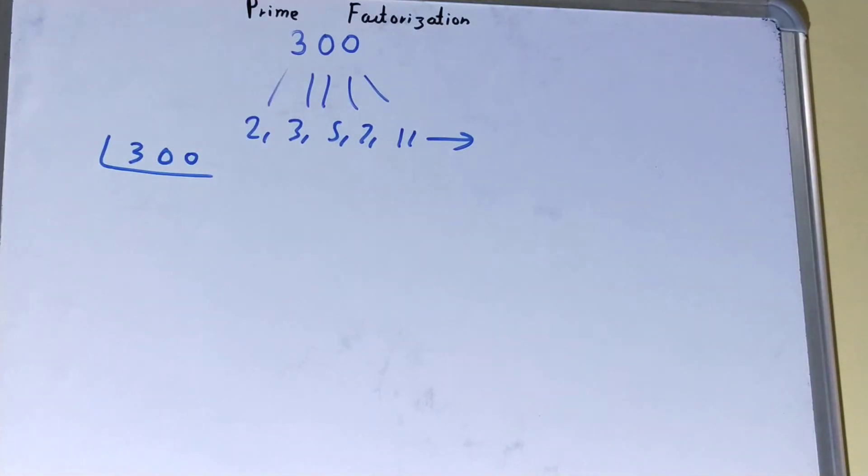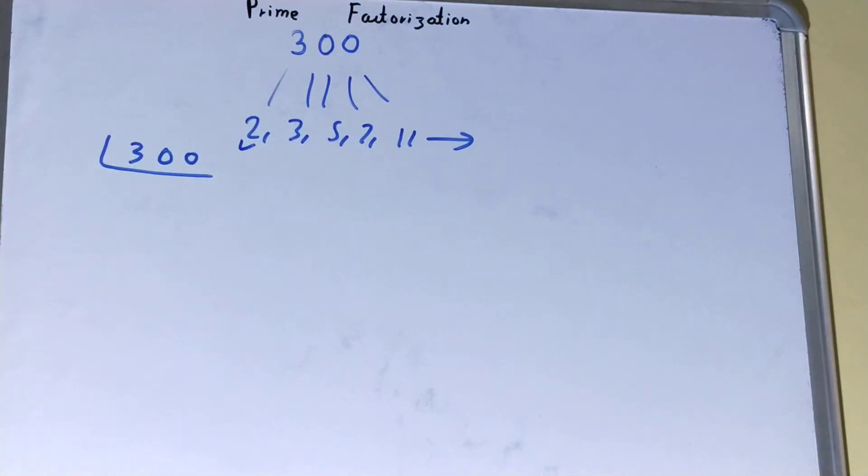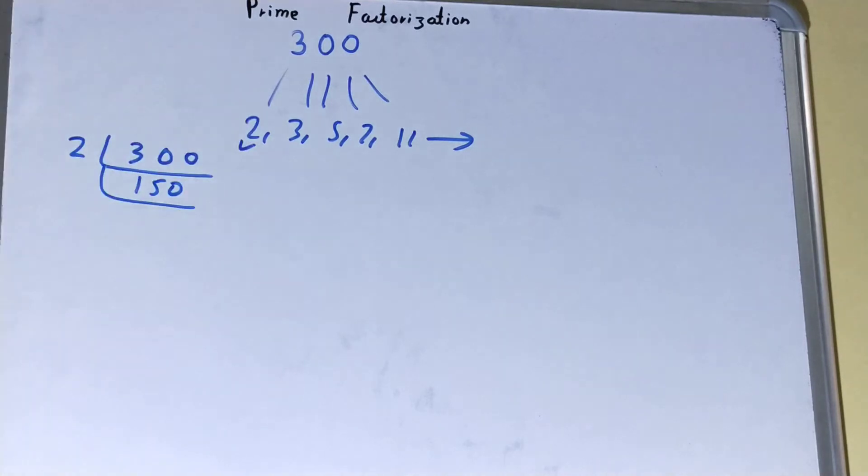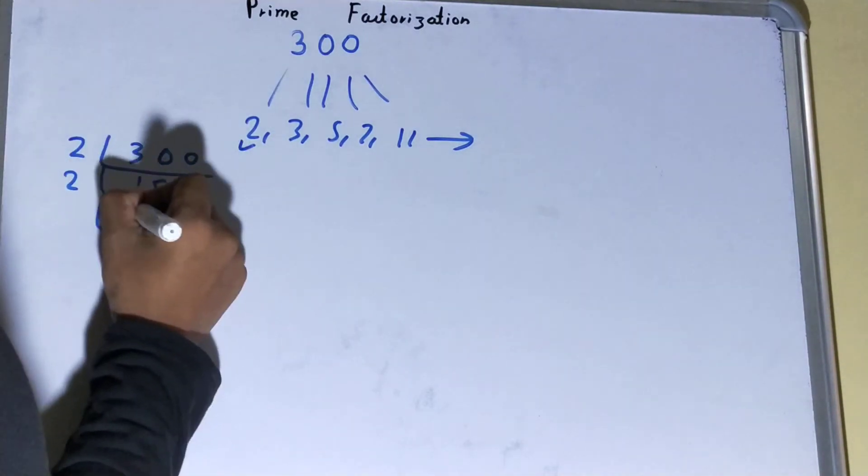How are we going to do this? We'll start with the lowest prime number, which we know is 2. Is 300 divisible by 2? Yes, because 300 is an even number. So let's divide it, we'll be left with 150. Again, is 150 divisible by 2? Yes, so we'll divide it, we'll be left with 75.